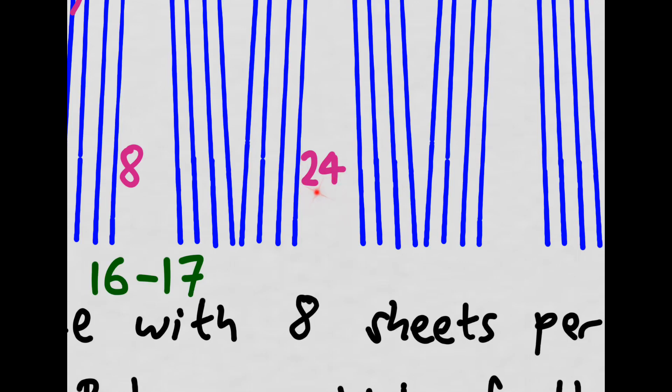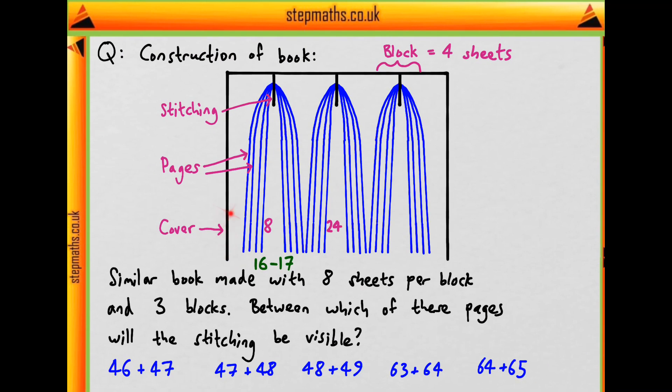then what about in the eight sheet book? So again, this whole thing can be multiplied by 2, because we know it's doubled its number of pages, so 24 becomes 48, and this gap corresponds to 48 to 49. And so this is indeed one of our options. So our final answer is C.